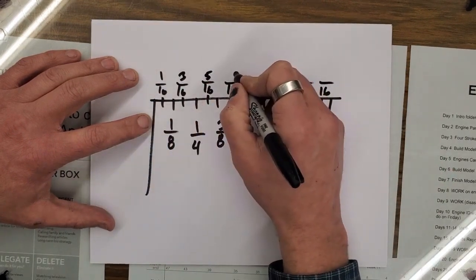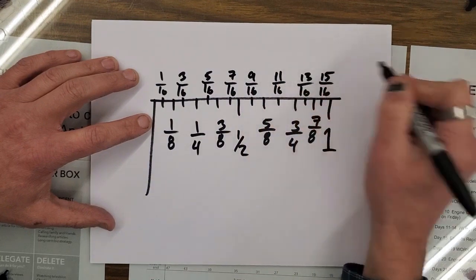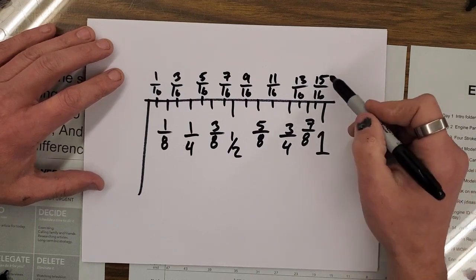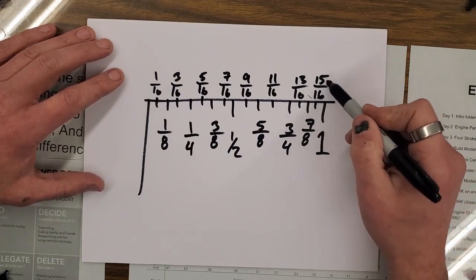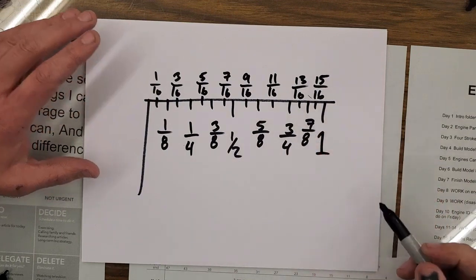Let's look. 1, 3, 5, 7, 9, 11, 13, 15. Just like that. And again, you can check yourself on the last one. 15 sixteenths, 7 eighths, 3 fourths, 1 half.